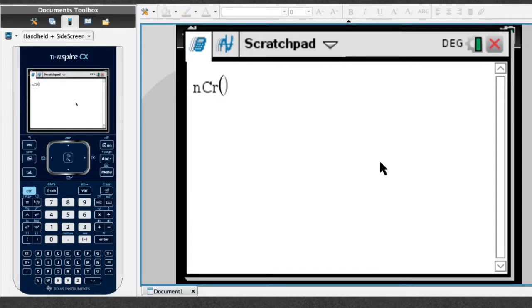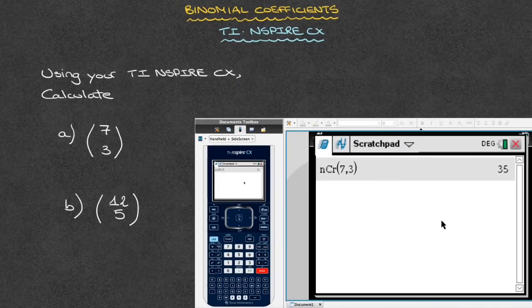All I have to do now to calculate the binomial coefficient 7 choose 3 is type 7, then 3. I then click Enter. And there we have it. That first binomial coefficient 7 choose 3 is equal to 35.